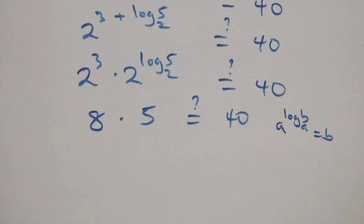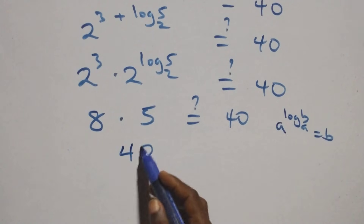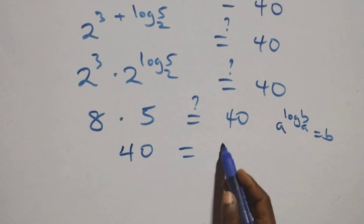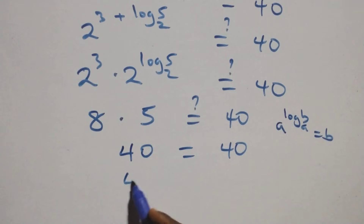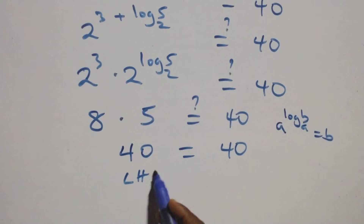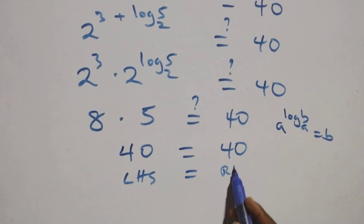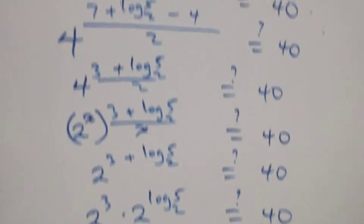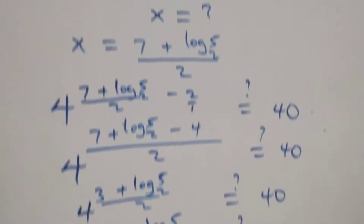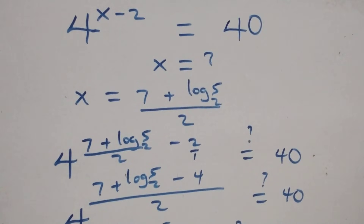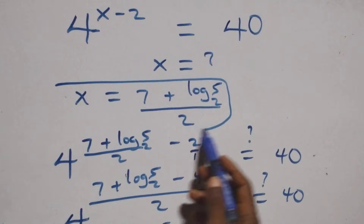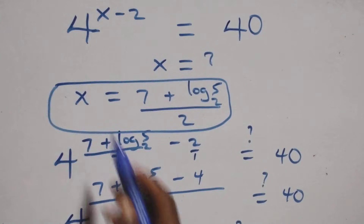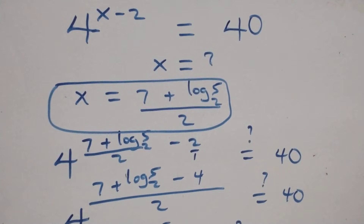Indeed 8 times 5 equals 40, which equals 40 on the right-hand side. Left-hand side equals right-hand side, so we conclude that x equals (7 + log₂5) / 2 satisfies the given problem. Thank you for watching, don't forget to subscribe for more videos.